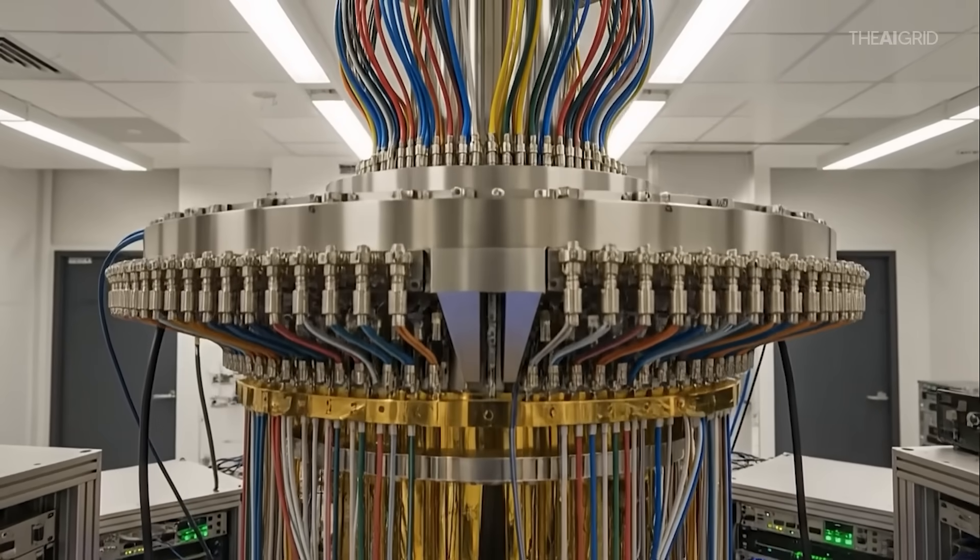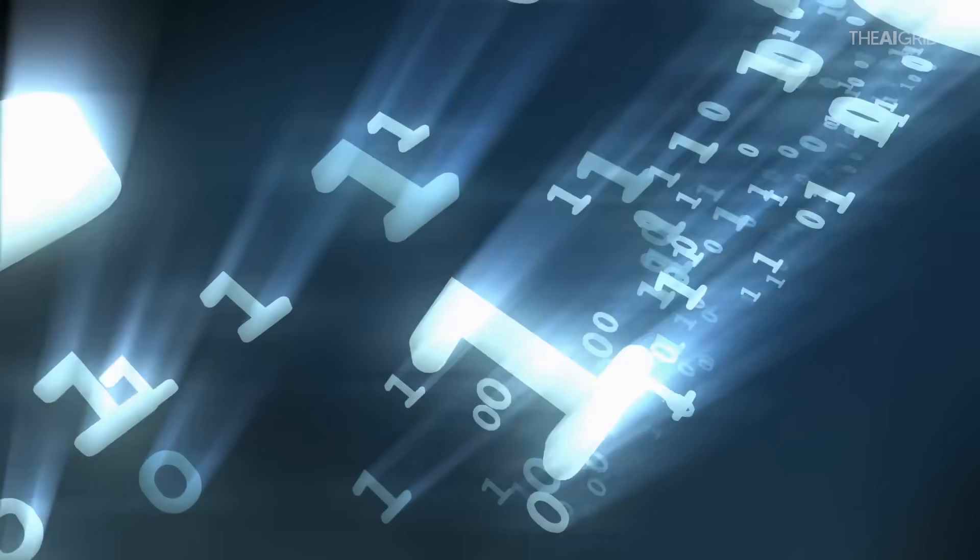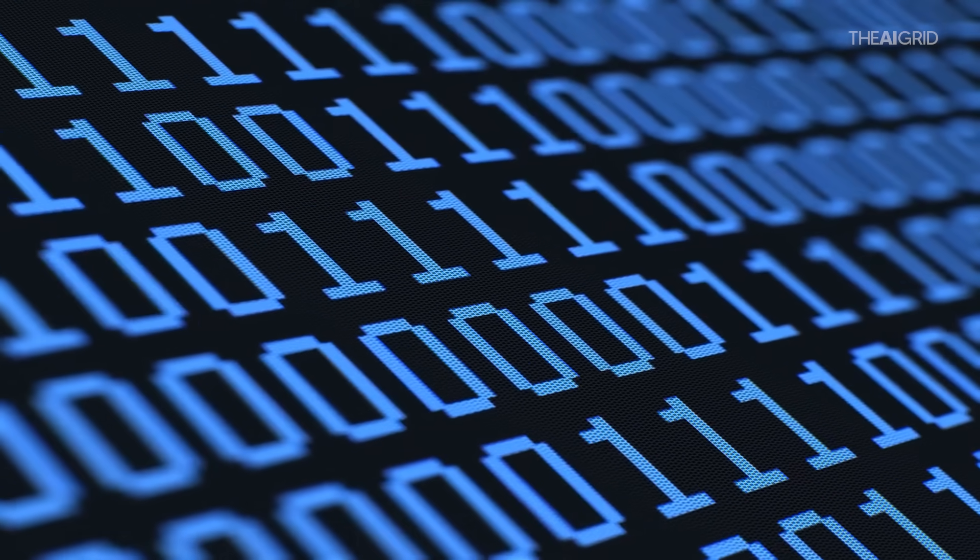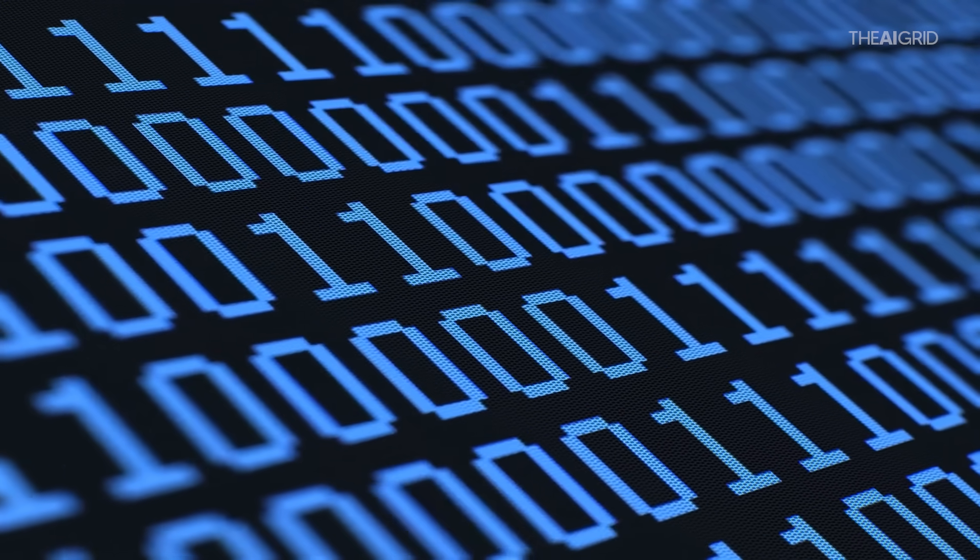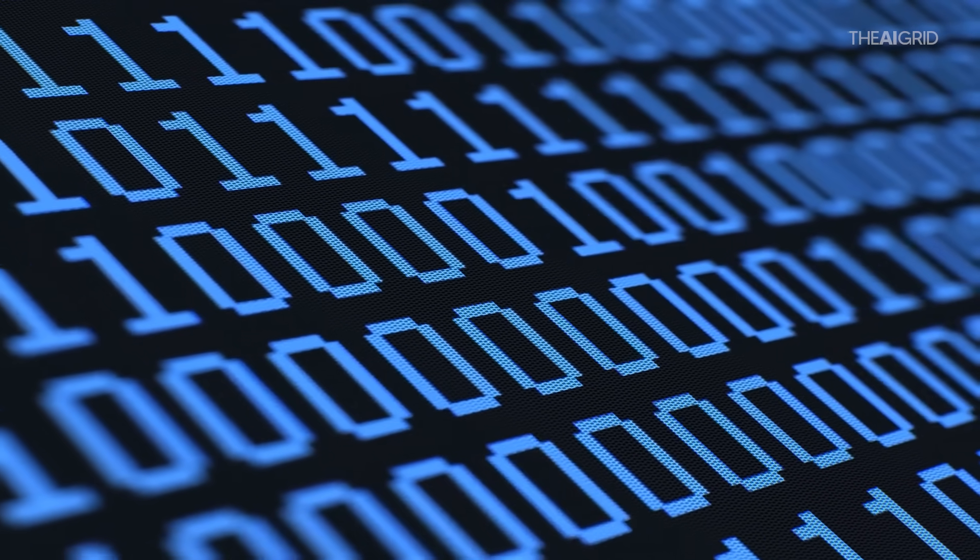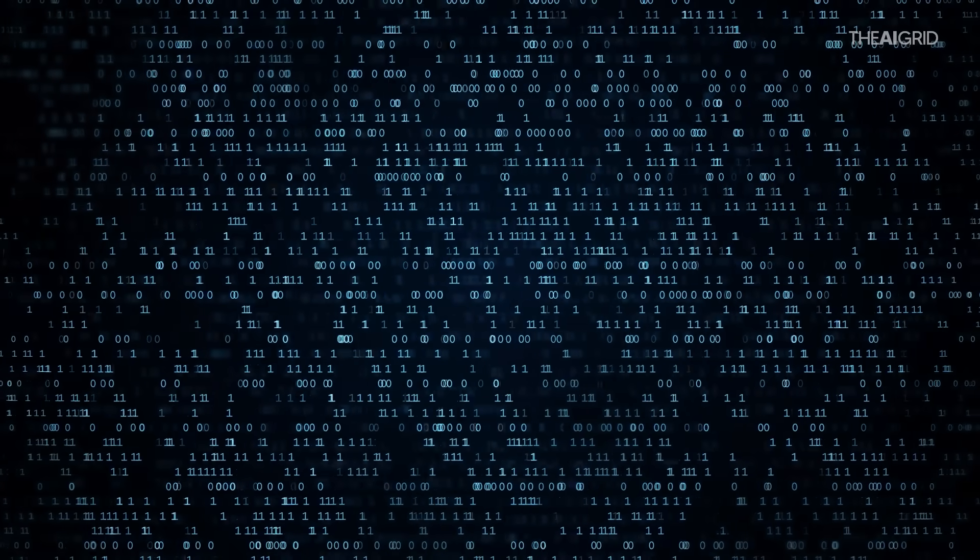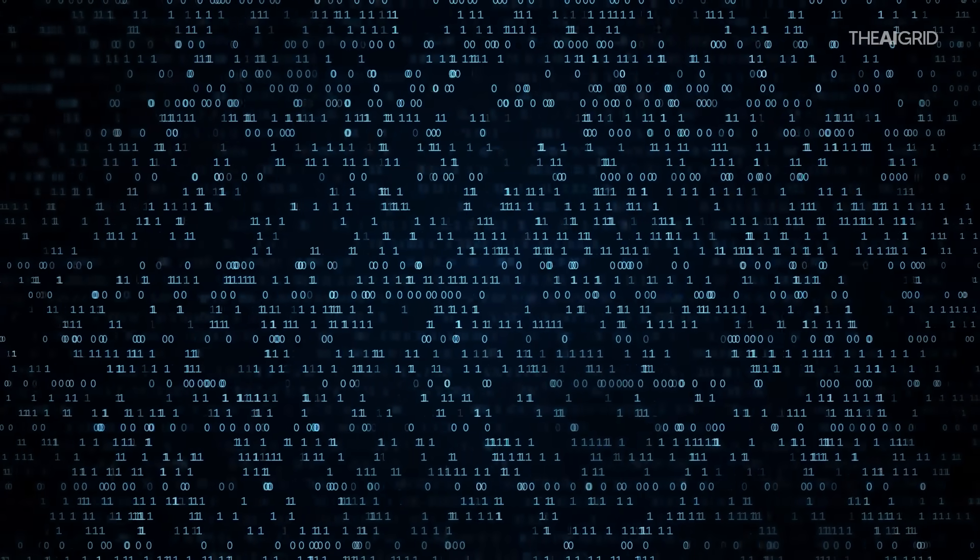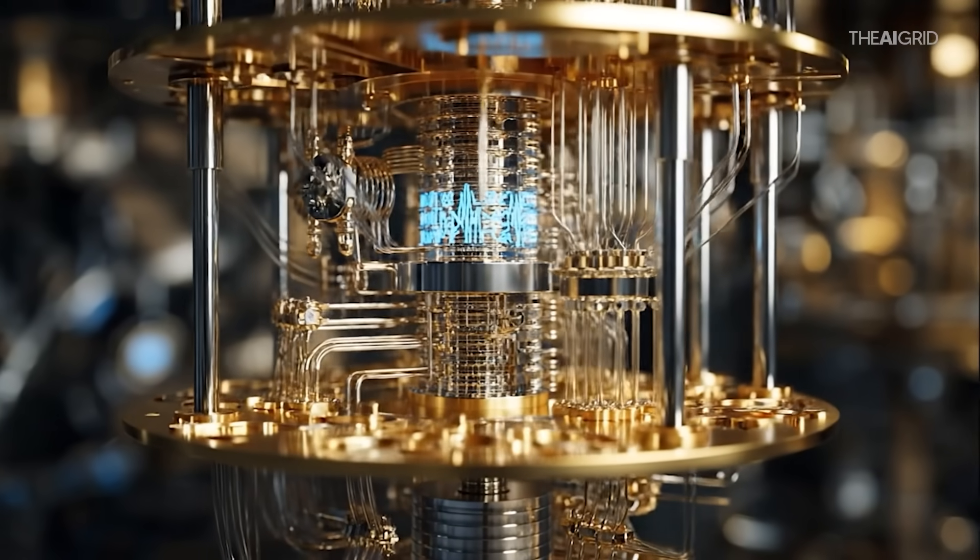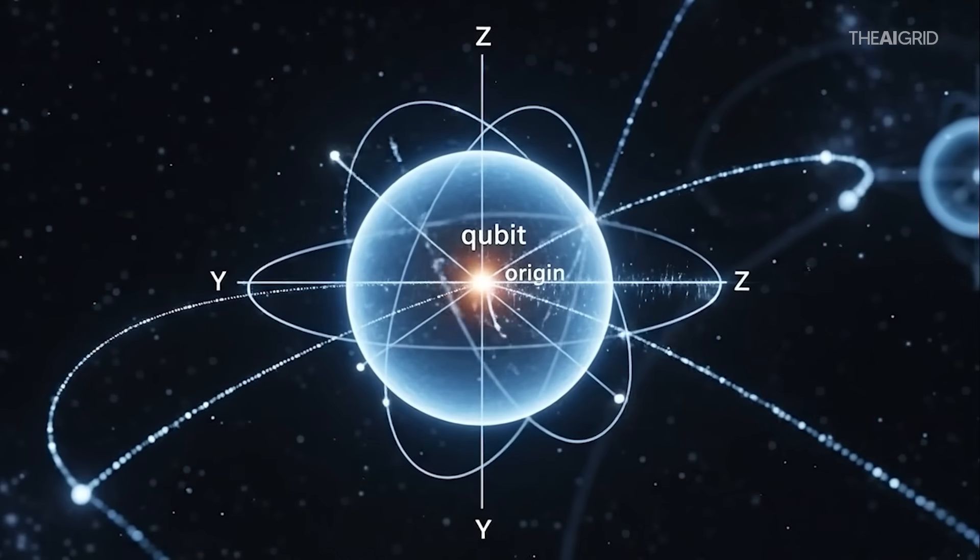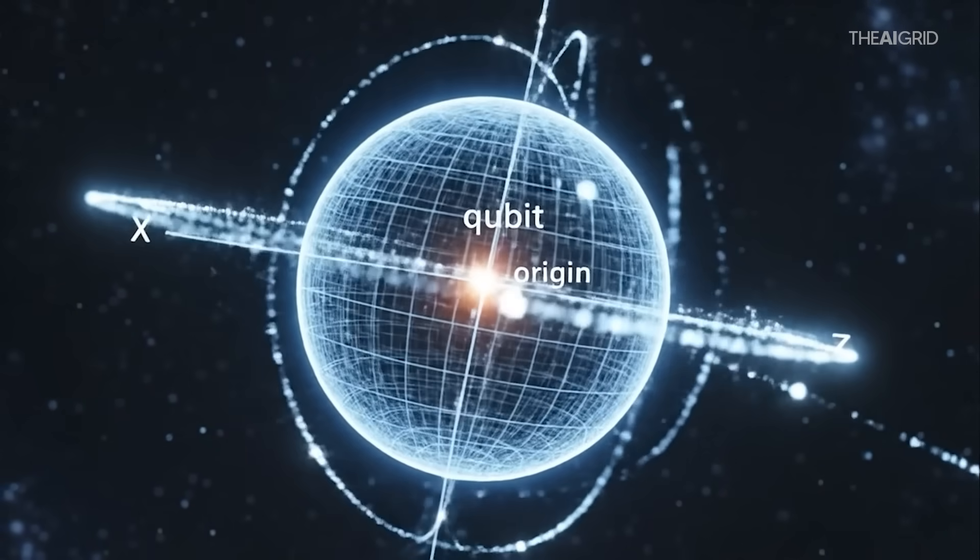You know how the computer that you might be watching this on now, your phone, your laptop, whatever, all of these things work on bits. These bits are basically the smallest piece of information that a computer can handle, and it's either basically a zero or a one. It's like a light switch, either on or off. Your computer does billions of these little switches flipping back and forth every second. Now quantum computers use something called qubits, and this is the craziest thing: a qubit can be zero, one, and this is the craziest part, it can be both at the same time.